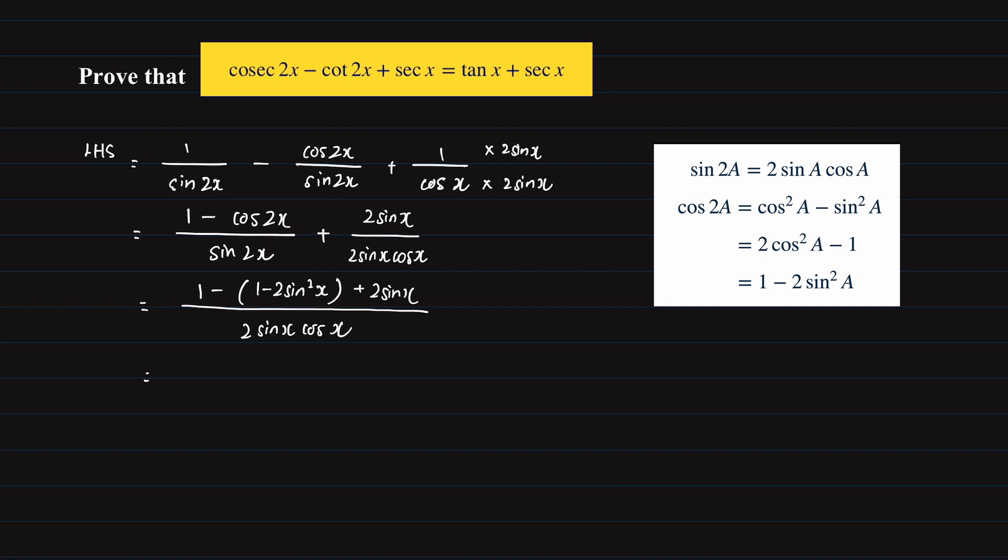Simplifying the terms, we will then have 2 sine squared x plus 2 sine x over 2 sine x cosine x. By factorizing out 2 sine x in the numerator, we will have 2 sine x, open a bracket, sine x plus 1, close a bracket.